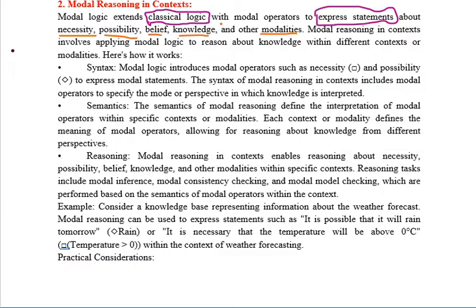Necessity means the thing which we need — the necessary thing. Possibility means how much possibility we have to get a particular thing. Suppose we want to find any possible ways to try that particular thing — that is what possibility means.